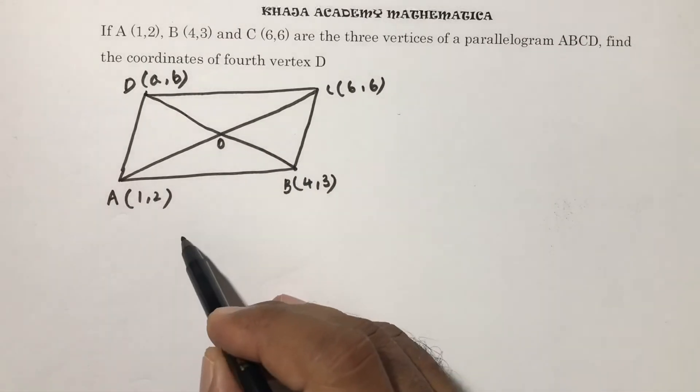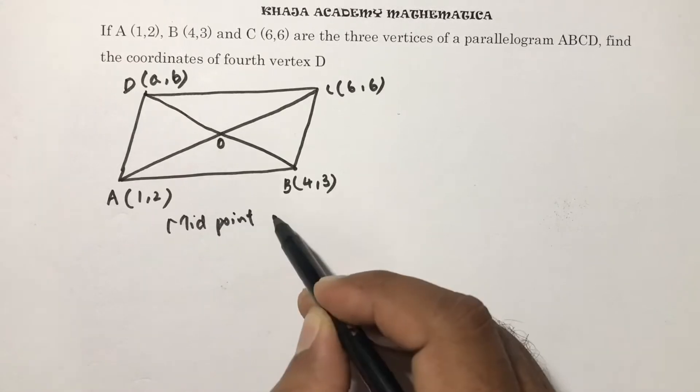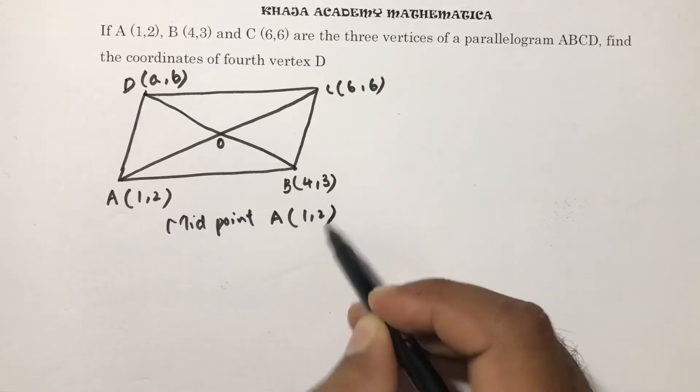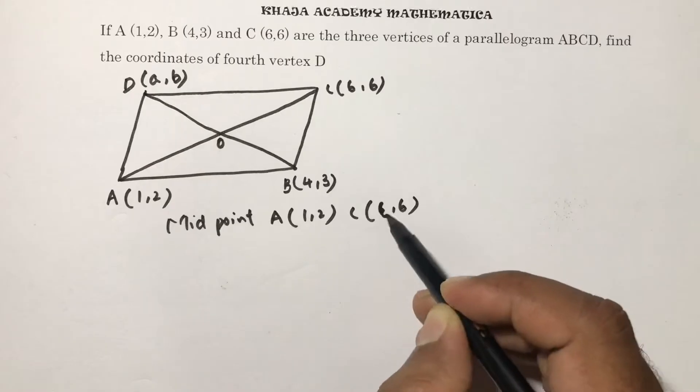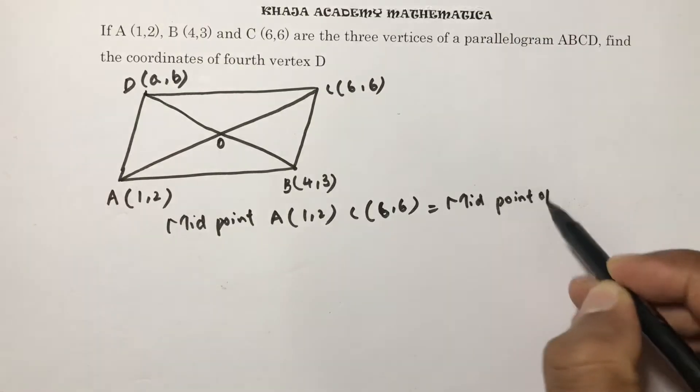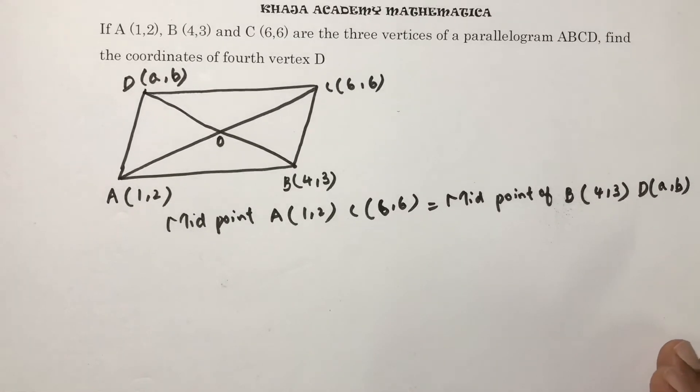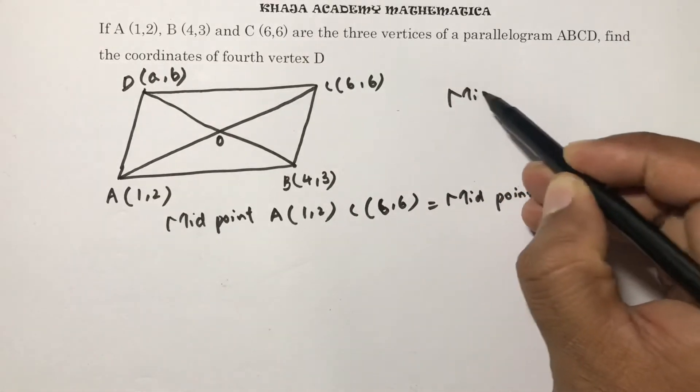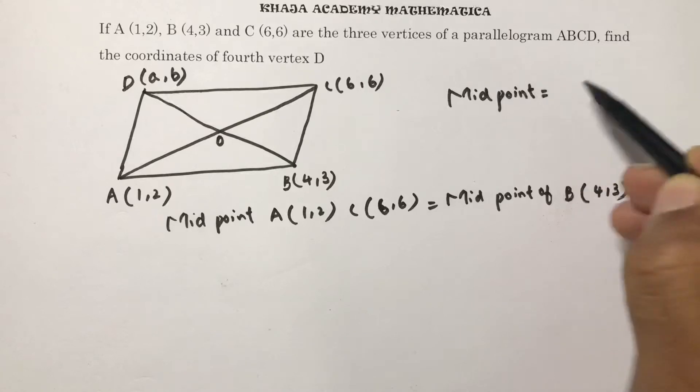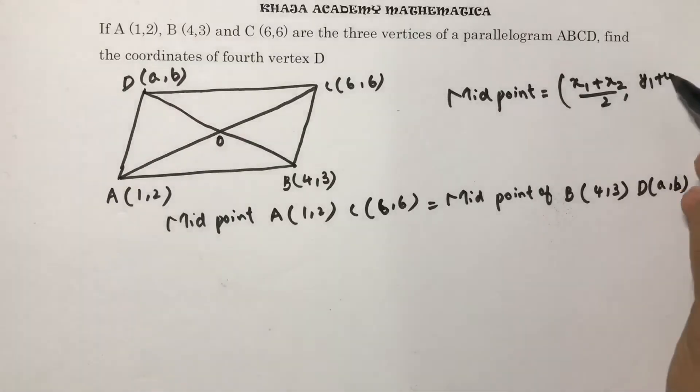Diagonals bisect each other. So diagonals bisect each other means midpoint of AC equals midpoint of BD. And the midpoint formula is if two points are given, midpoint is x1 plus x2 by 2, y1 plus y2 by 2. So this is the midpoint formula.